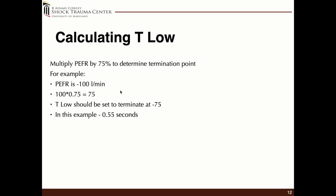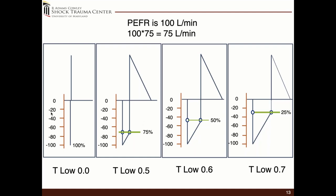Calculating the T low: an easy marker for the adult population is to start with 0.5 — anywhere from 0.4 to 0.6 — then calculate where you need to be. The easiest way is to take your peak expiratory flow rate, the fastest flow coming out of the lung, and multiply by 75%. Your target should be at that 75% level. For example, if the peak is 100 liters, you should target 75 liters as your termination point.